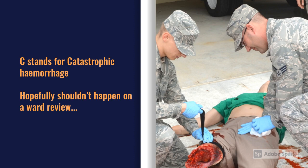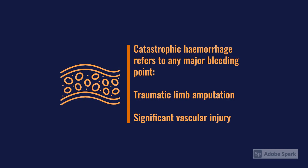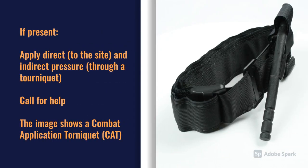Catastrophic hemorrhage means something like a major arterial or venous hemorrhage from an amputated limb, or a significant vascular injury from a carotid or femoral artery that's been punctured. If you do come across it, the key is to apply direct and indirect pressure. We often use tourniquets — you might see them in the military — just to try to stop that bleeding, and obviously call for help.